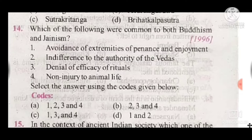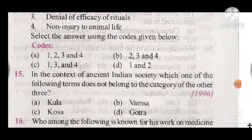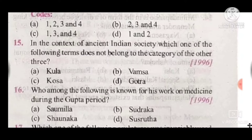Question 15: In the context of ancient Indian society, which one of the following terms does not belong to the category of the other three? Answer is Parivrashaka. Question 16: Who among the following is known for his work on medicine during the Gupta period? Answer is D, Sushruta.